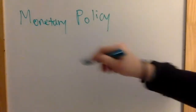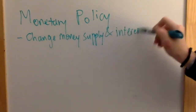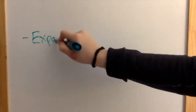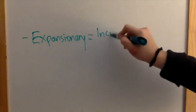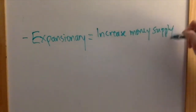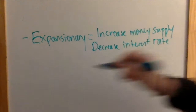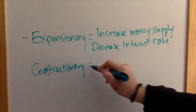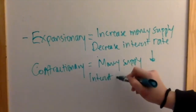Monetary policy, on the other hand, is done through the central bank, not the government. It's when they change the interest rate and money supply. Expansionary monetary policy involves an increase in money supply and a decrease in interest rates. Lowering the cost of borrowing money will entice consumers and firms to spend rather than save, thus increasing investment and consumption, and in turn AD. Contractionary policy will decrease money supply and increase interest rates, and this decreases AD.